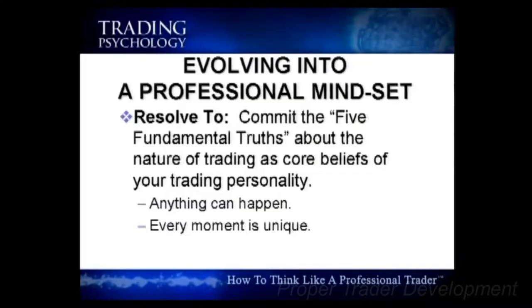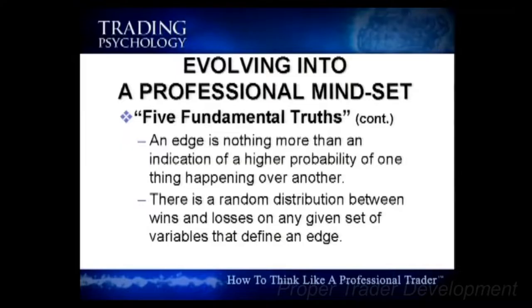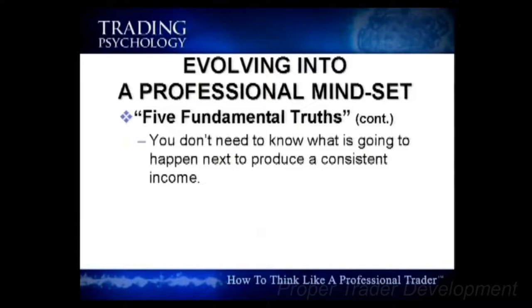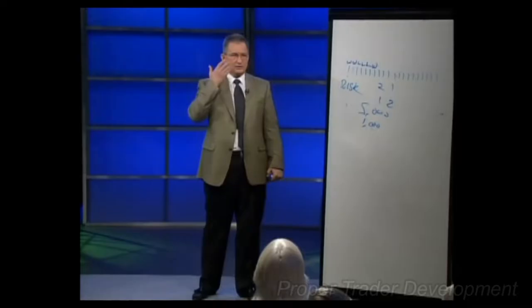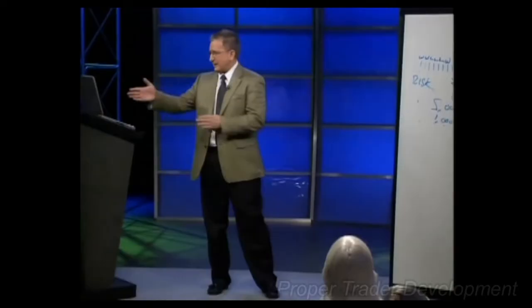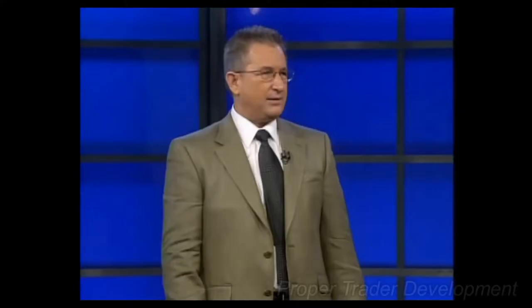Resolve to commit the five fundamental truths about the nature of trading as core beliefs of your trading personality. Those five fundamental truths are: anything can happen; every moment is unique; an edge is nothing more than an indication of a higher probability of one thing happening over another; there is a random distribution between wins and losses on any given set of variables that define an edge; and you do not need to know what's going to happen next to produce a consistent income. As you do this exercise, if you find conflicting and competing thoughts, pay attention to what you're thinking and refocus on what you want to believe.